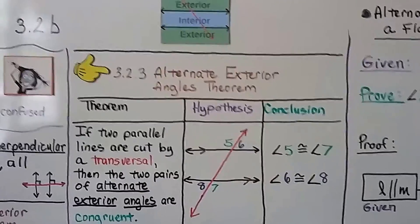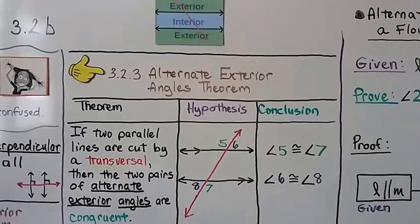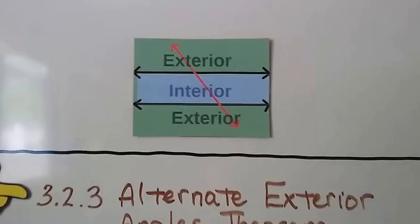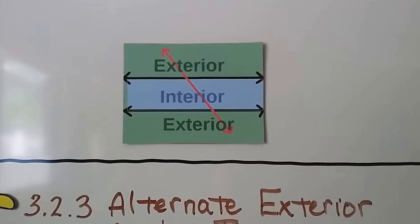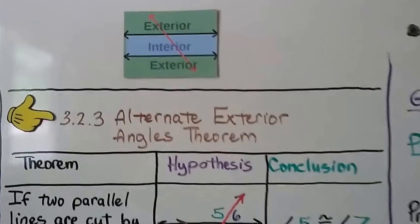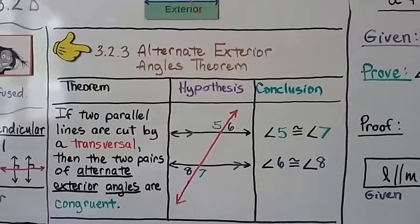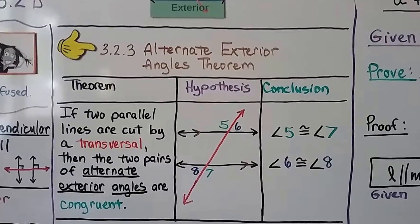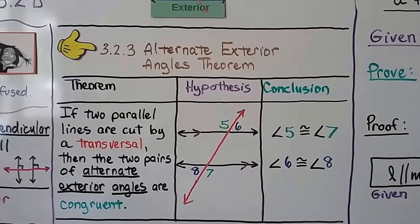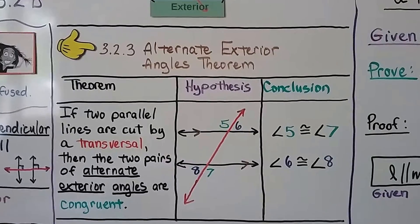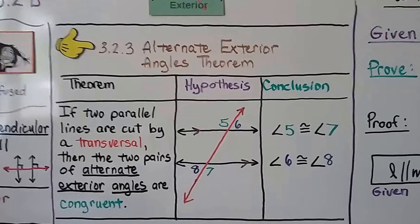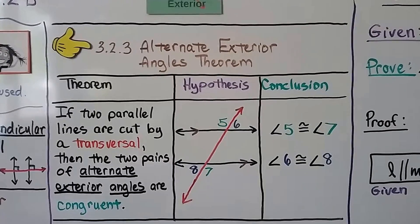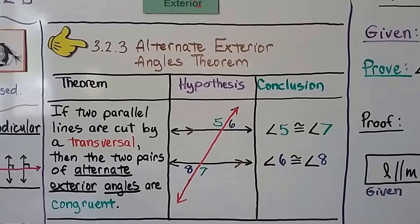This is the Alternate Exterior Angles Theorem. You can see from the card here which are going to be considered interior or exterior. Our theorem says if two parallel lines are cut by a transversal, then the two pairs of alternate exterior angles are congruent. So 5 is congruent to 7, and 6 is congruent to 8.